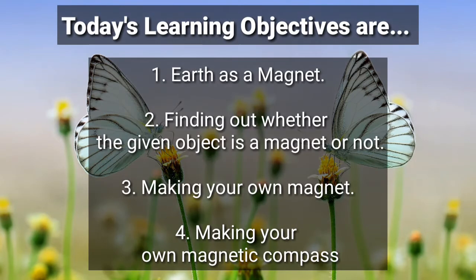Today's learning objectives are: earth as a magnet, finding out whether a given object is a magnet or not, making your own magnet, and making your own magnetic compass.